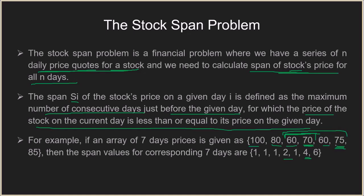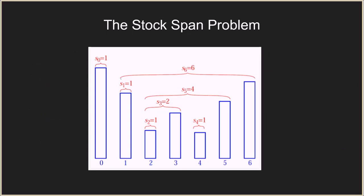We have to calculate the span for each of these elements, giving one span per day for all n elements. Looking at this diagram: the span of the first element is always one since there is no element before it. For elements where the previous bar is bigger, the span is one. Then we see two elements smaller than or equal to a given element so the span becomes two. For the fifth index, four elements qualify, so the span is four. For the sixth element, the span becomes six.